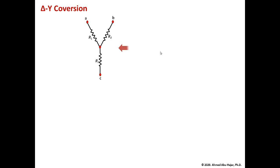If you have a Y load, you can convert it to a delta load, and vice versa. When you do the conversion, it is important that you keep the same order of the node names — A, B, C in both. R1 is connected to node A, R2 to node B, R3 to node C in the Y connection. When you convert to a delta, the resistor names are always opposite to the node: RA opposite node A, RB opposite node B, RC opposite node C.